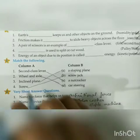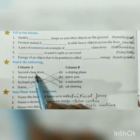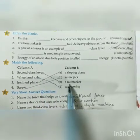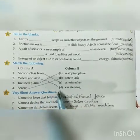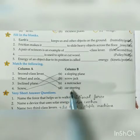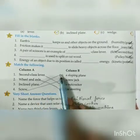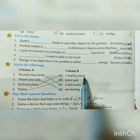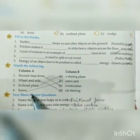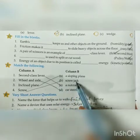Next, question number E — match the following. Second class lever matches with nutcracker. Wheel and axle matches with option D, that is car steering. Inclined plane matches with option A, a sloping plane. Screw matches with option B, that is screw jack.